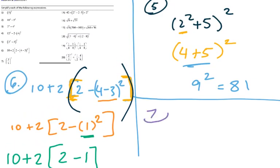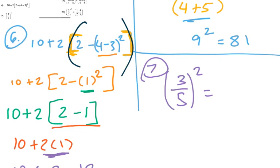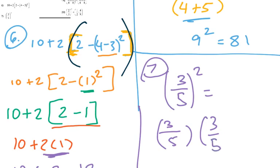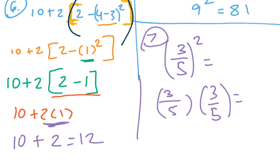Number seven: when we square a number we multiply it by itself, so this is 3 times 5 quantity squared, which means 3 times 3 and 5 times 5 — giving us 9 times 25. Some of you might want to cancel things, but there's nothing to cancel with 3 and 5, so we just multiply across.